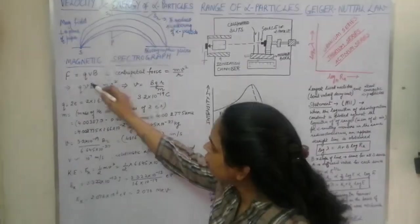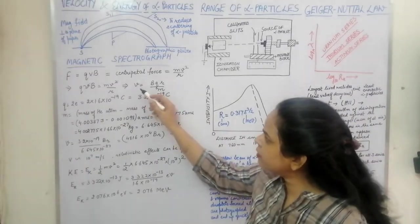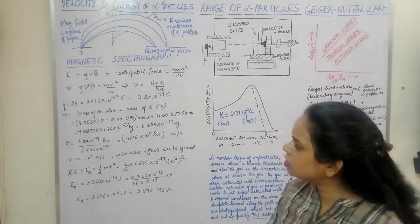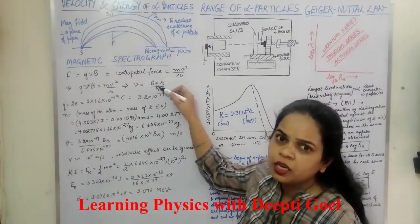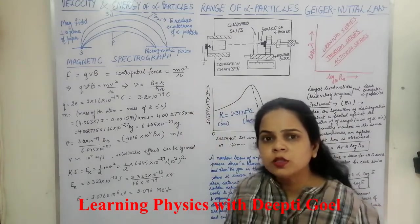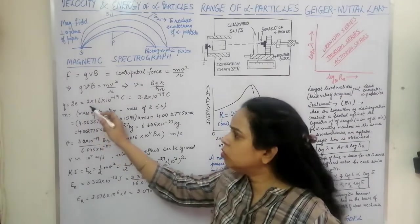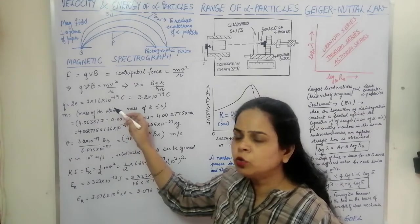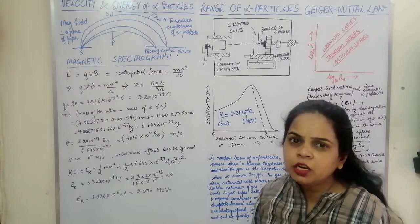V and V cancel, and we get the velocity V = BQR/M. Here Q is the charge on the alpha particle. Since the helium nucleus has two protons, Q = 2e = 3.2×10⁻¹⁹ coulombs. The mass of the alpha particle equals the mass of the helium atom minus the mass of two electrons: 4.003873 − 0.001098 = 4.002775 AMU.